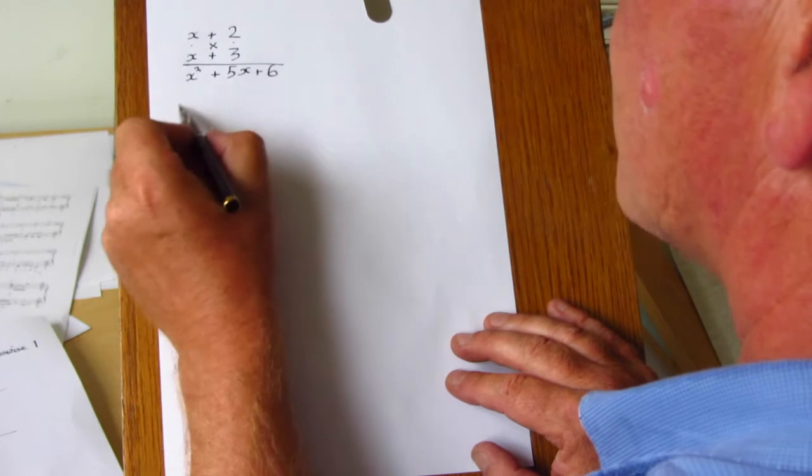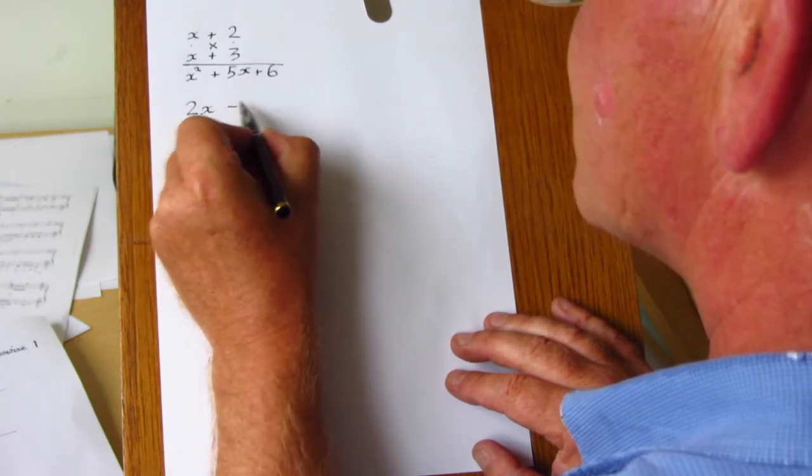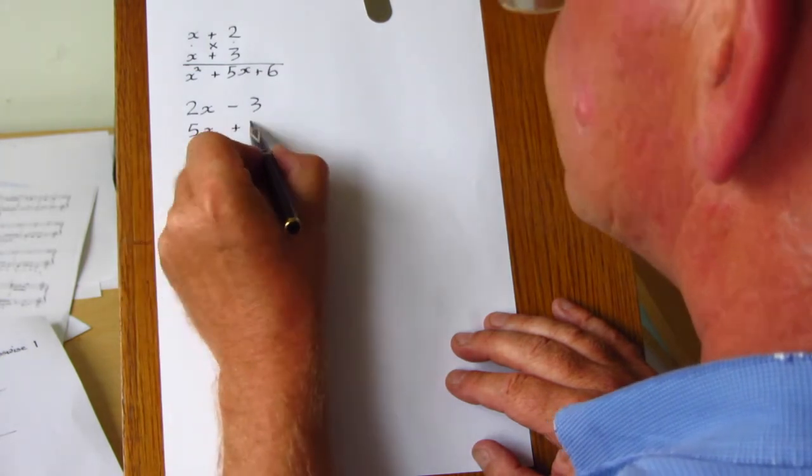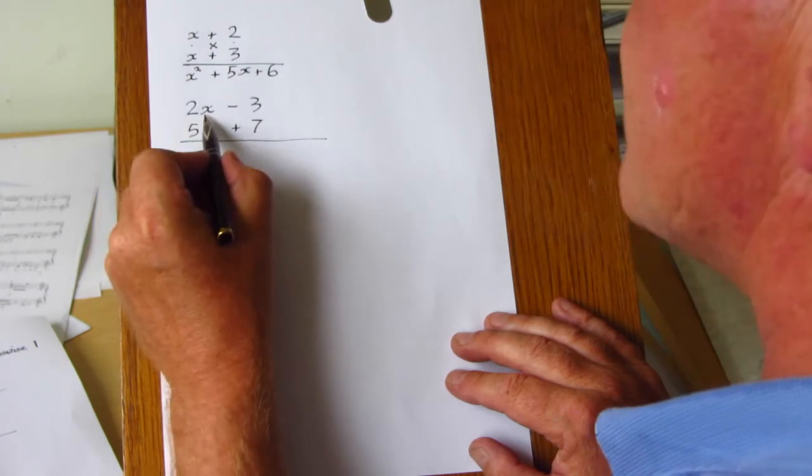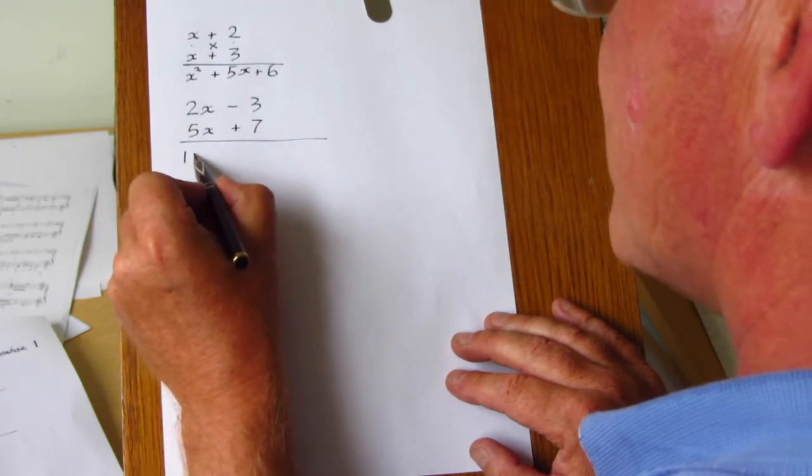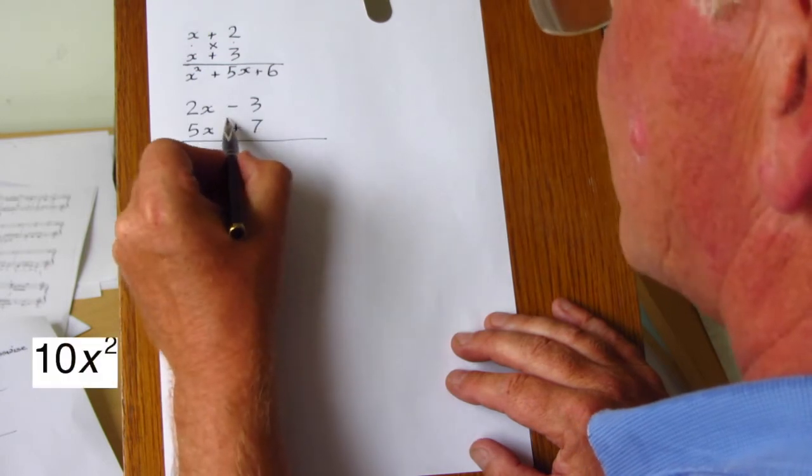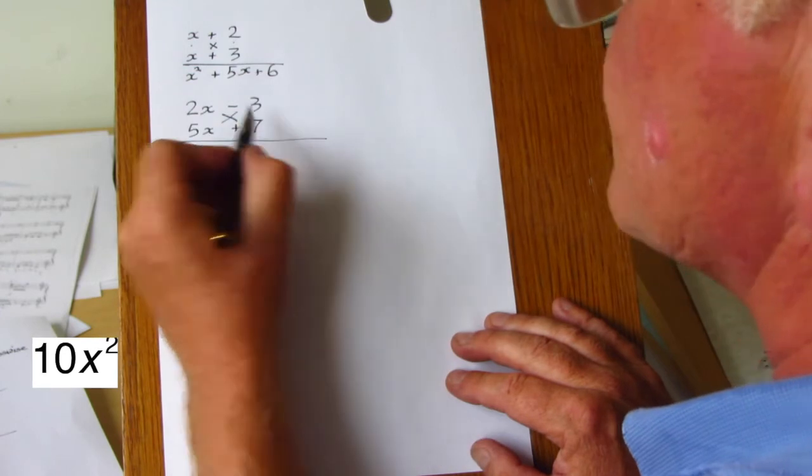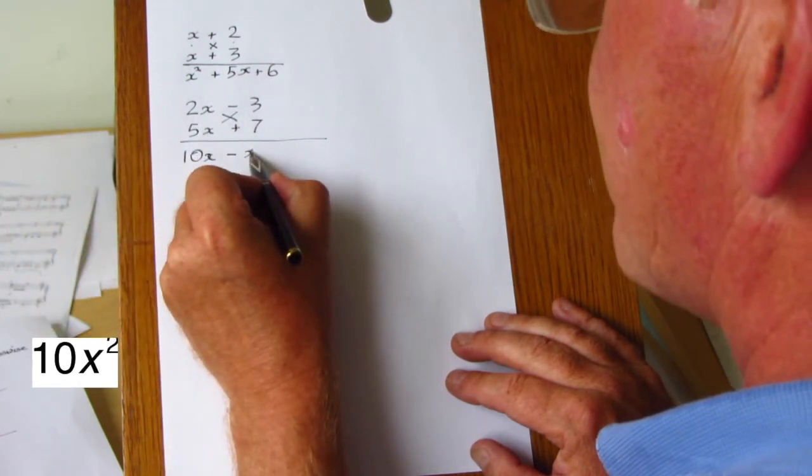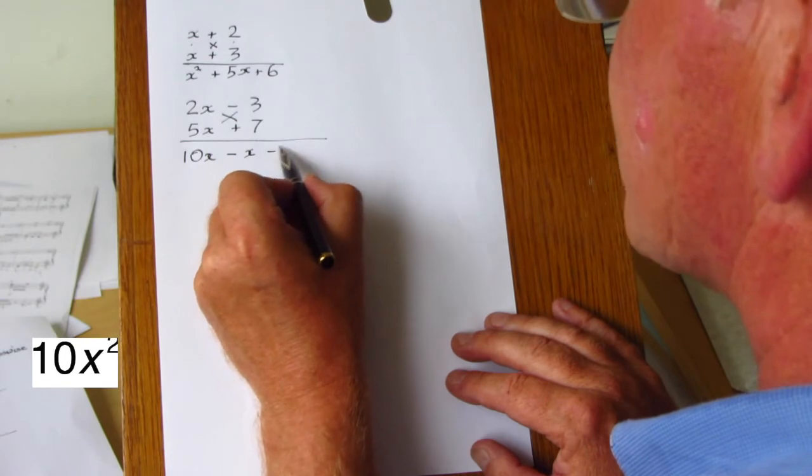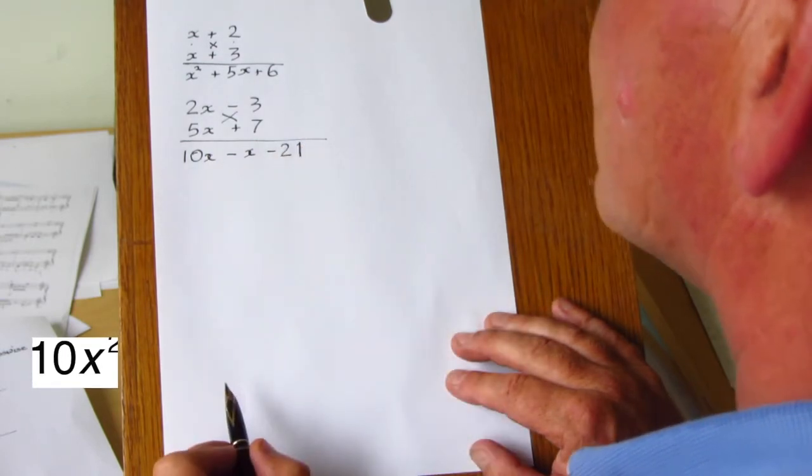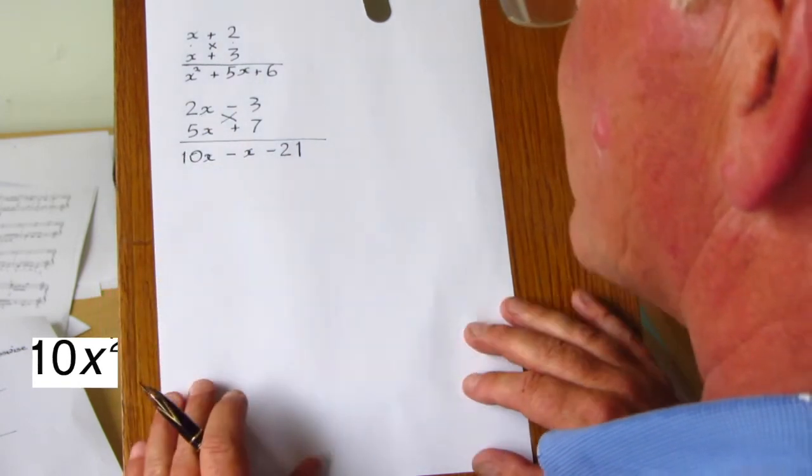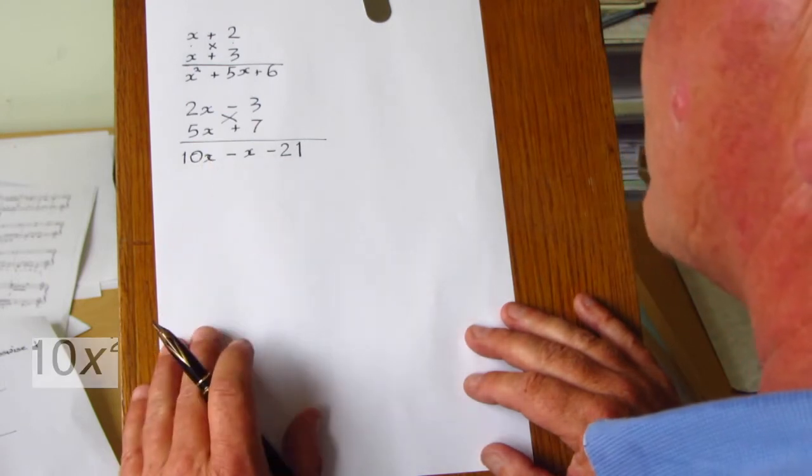And we can employ this for larger products algebraically, like this. 2x times 5x gives 10x squared. Then we have plus 14x. We have minus 15x going this way. Add those two together, we get minus 1x. And minus 3 times 7 is minus 21. And that is a very neat and useful way of multiplying algebraically.